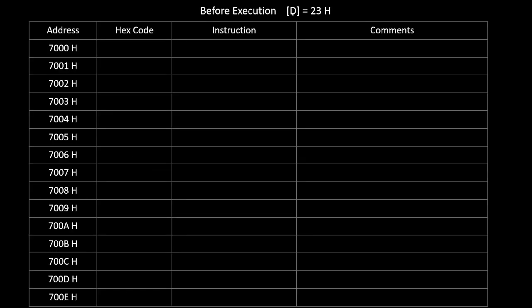Let's write the program. Before execution, D is 23H and we are writing our program from 7000H. The first instruction is MVI C, 08H — it will act as a counter for how many times we want to rotate the content, which is 8 times, because the accumulator is an 8-bit number. MVI C, 08H is a 2-byte instruction, so its opcode is written at 7000H and 08H is written at 7001H.